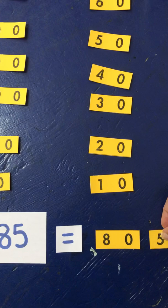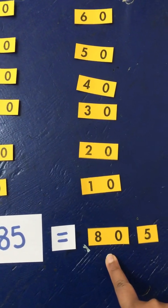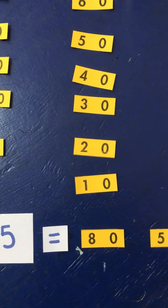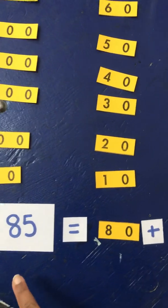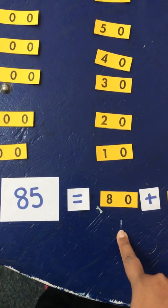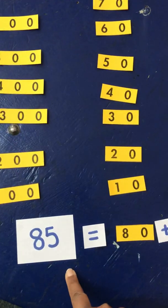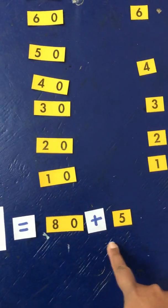Now what does that tell us? That tells us 85 is equal to 80 and 5. And remember in maths we say and is plus. So we got 85 is equal to 80 plus 5. One more time: 85 is equal to 80 plus 5.